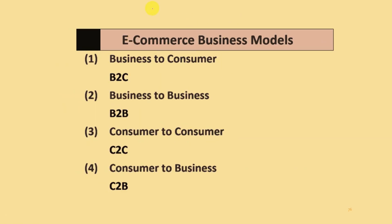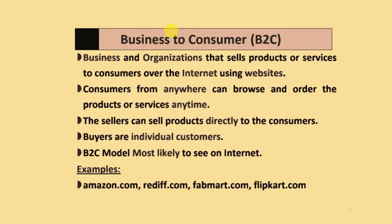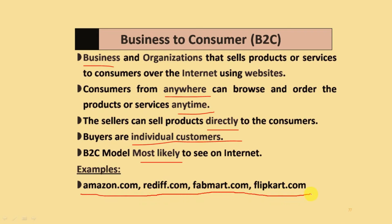E-commerce business models: the four models are B2C (Business to Consumer), B2B (Business to Business), C2C (Consumer to Consumer), and C2B (Consumer to Business). Business to Consumer (B2C): business organizations sell products or services to consumers over the internet via websites. Consumers from anywhere can browse and order products anytime, sellers can sell directly to consumers, and buyers are individual customers. B2C is the most commonly seen model on the internet. Examples include amazon.com, reddit.com, and Flipkart.com.